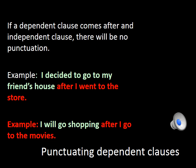On this slide we have the opposite situation. If a dependent clause comes after an independent clause, there will not be any punctuation. We have essentially the same sentence but with the clauses switched: 'I decided to go to my friend's house after I went to the store.' Anytime the dependent clause comes after the independent clause, there is no comma needed. Always remember: dependent clause first — use a comma. Dependent clause second — no comma.